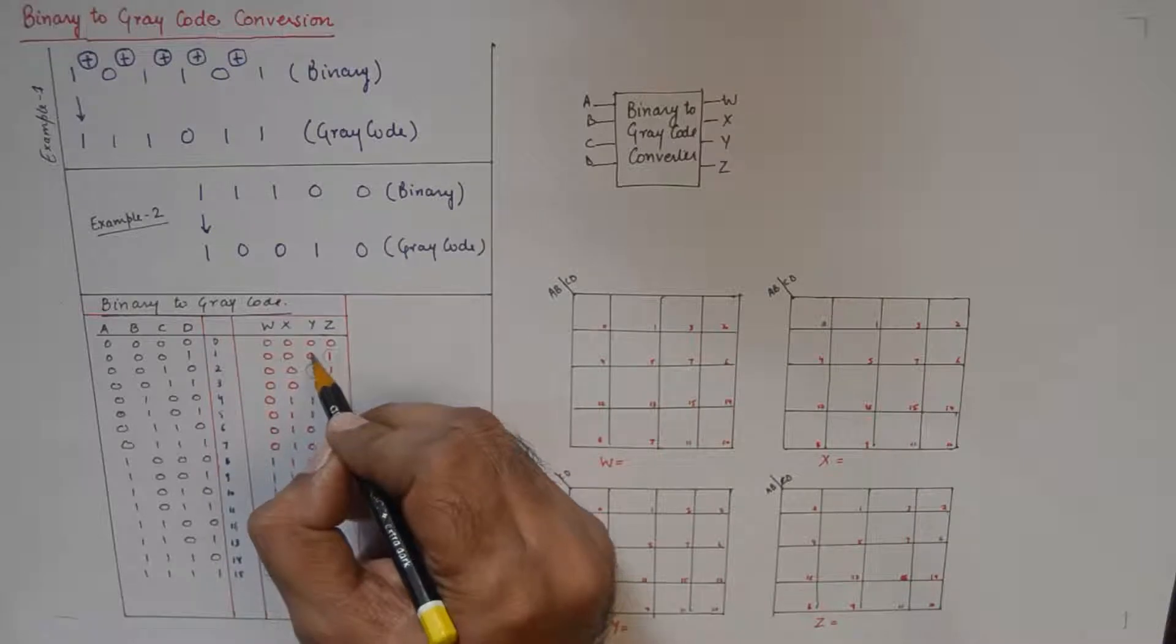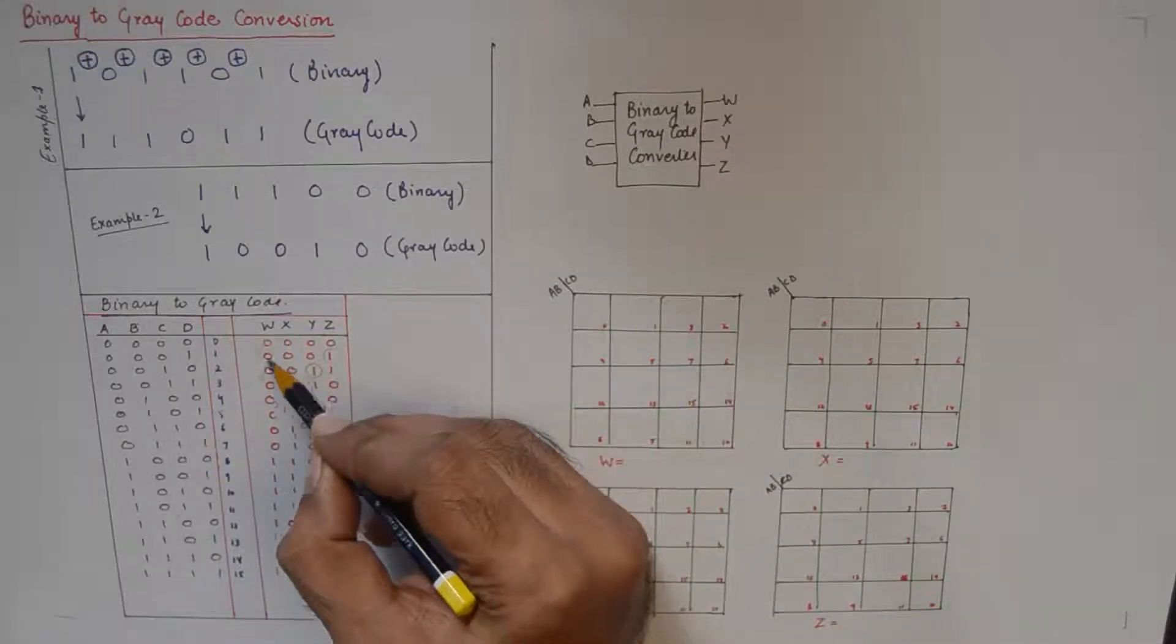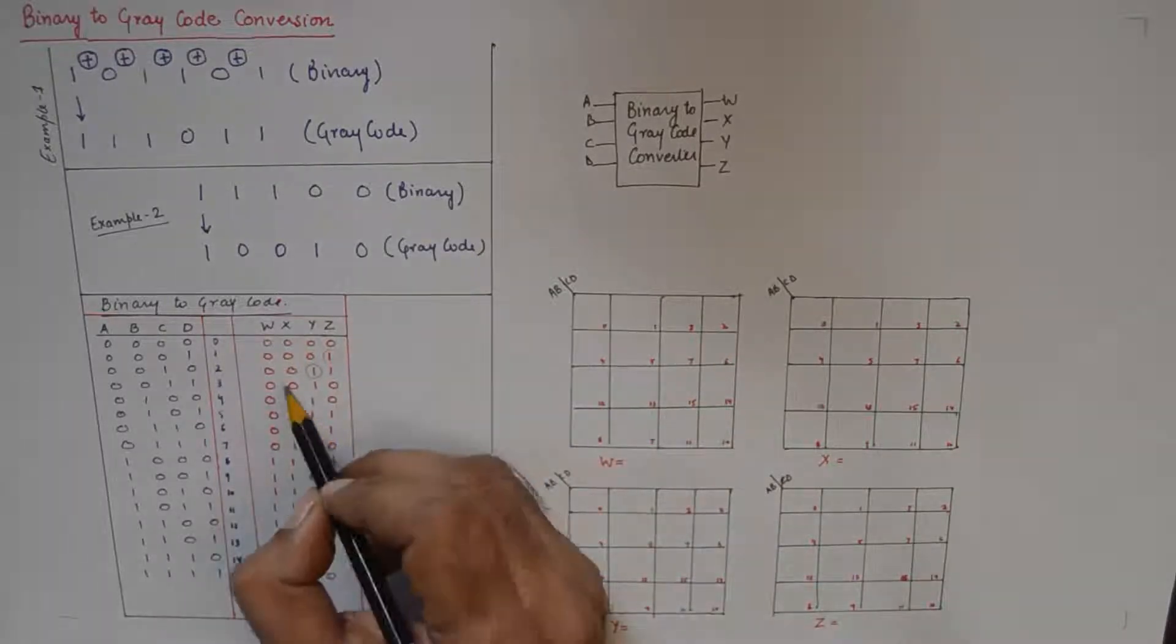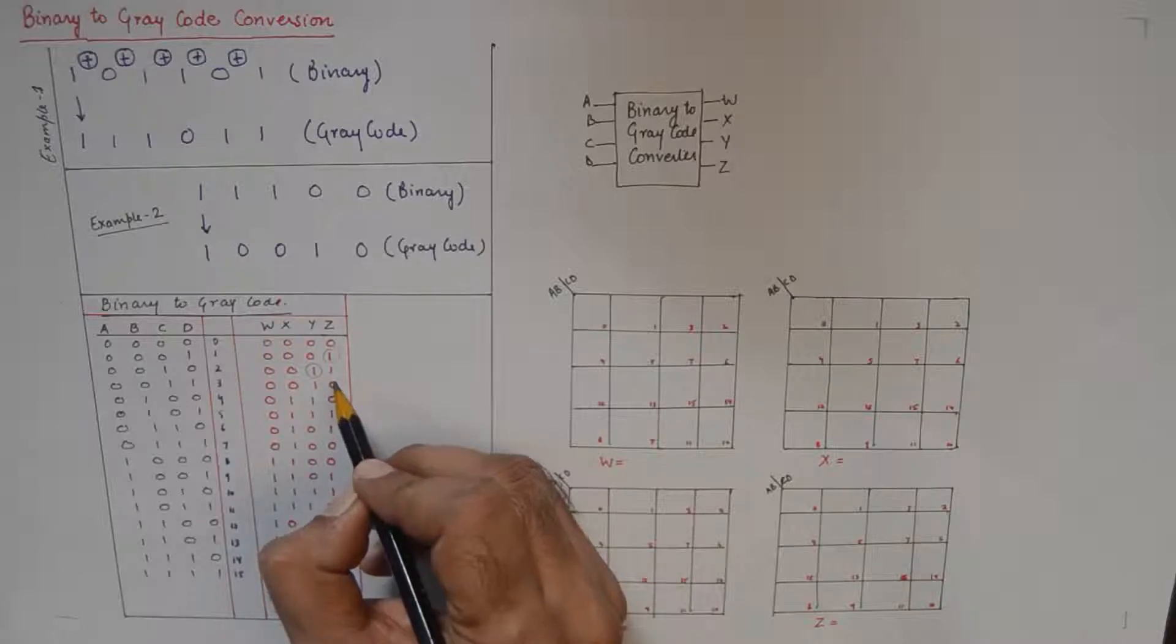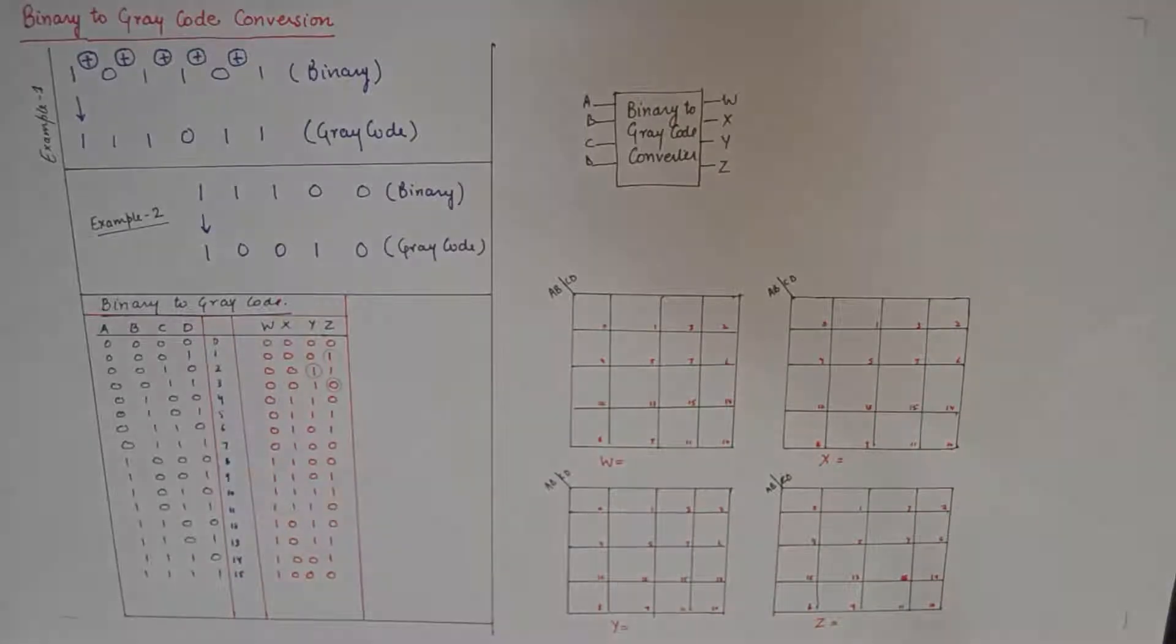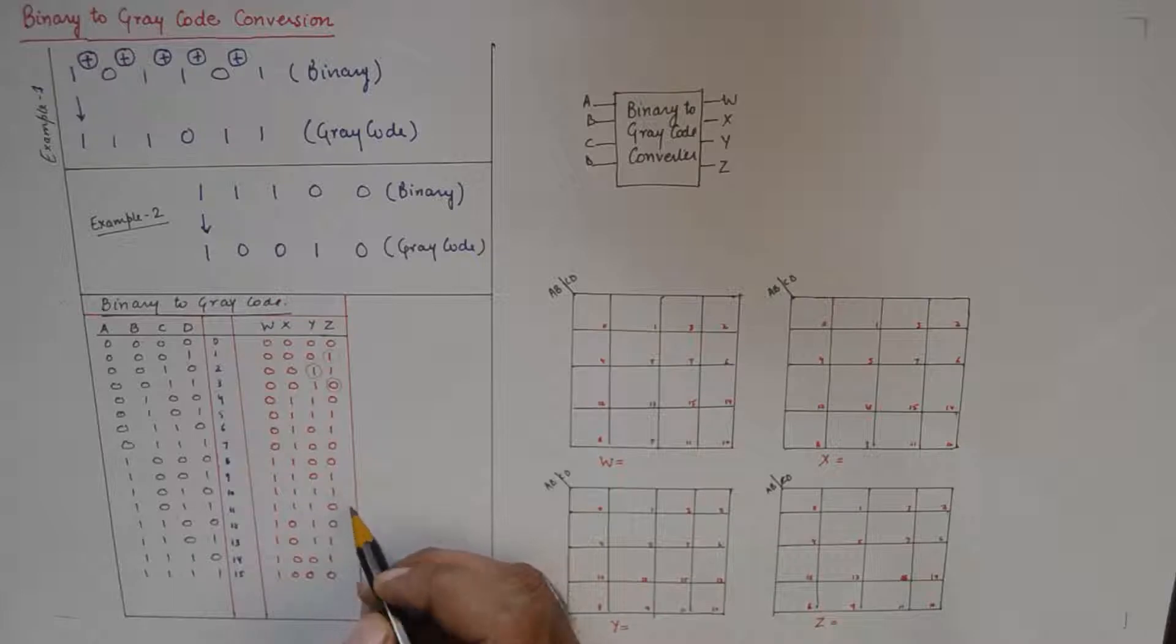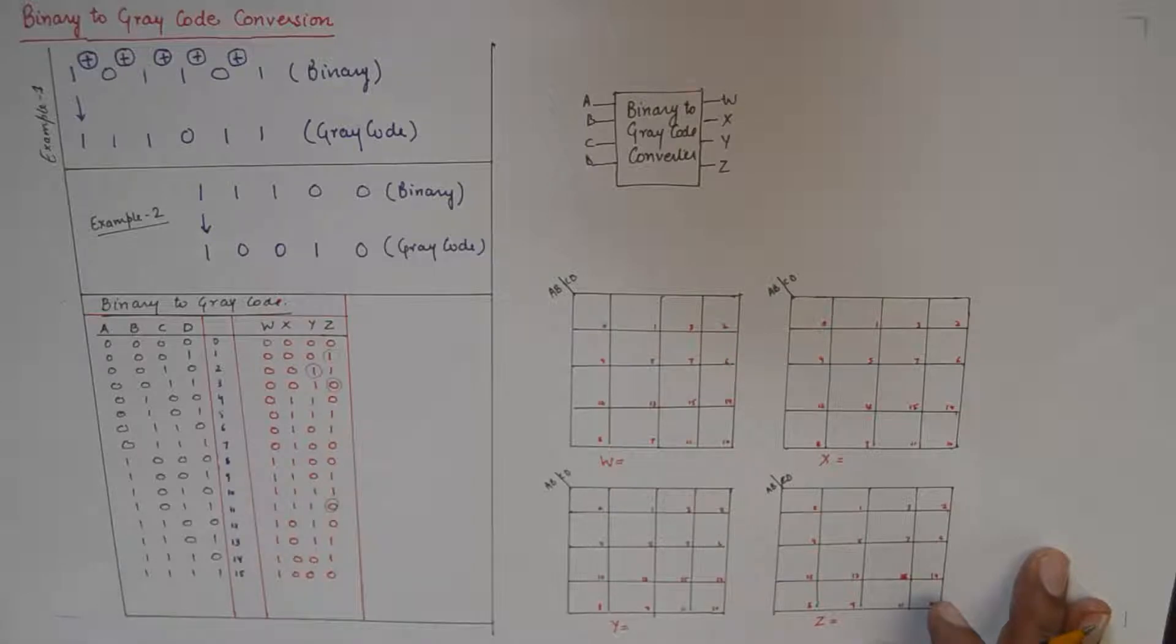And when we go from 1 to 2, this bit is changing from 0 to 1, this remains same, this remains same, and this remains the same also. Similarly when we go from 2 to 3, this one is changing, everything - all the other 3 bits are remaining as they were. And you can check any preceding number, for example 1111, the next number is 1110, so there's just one change.